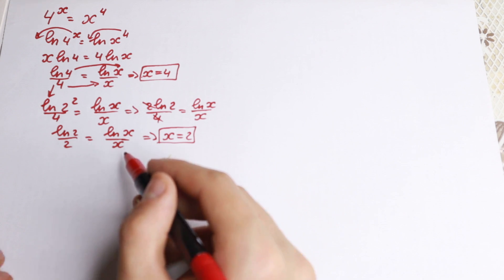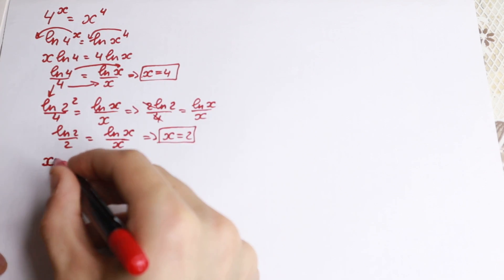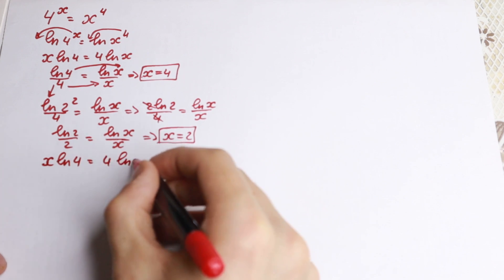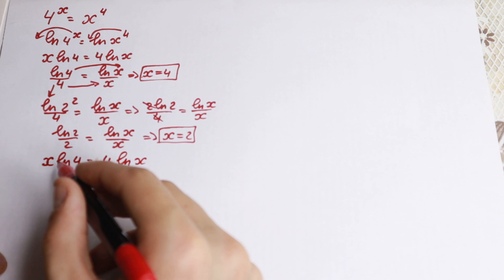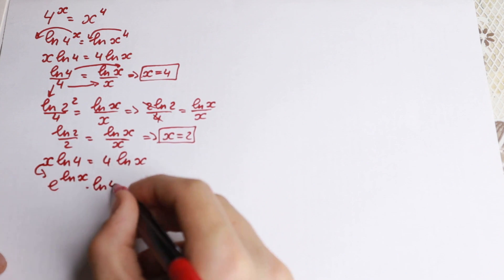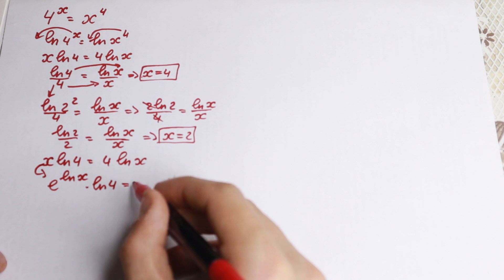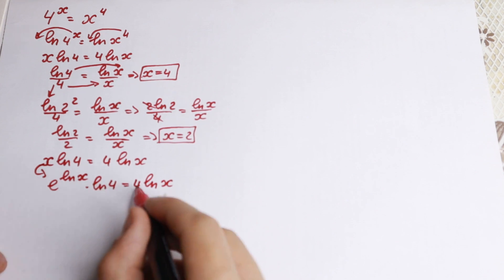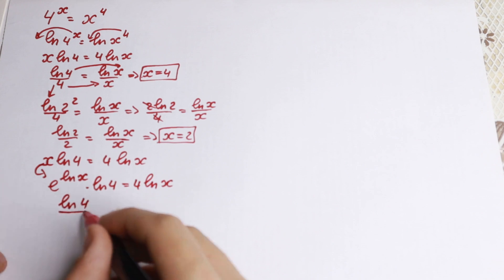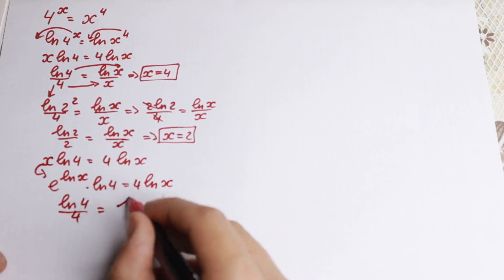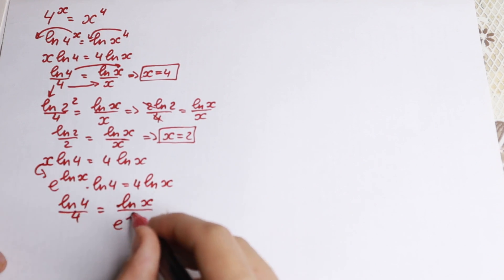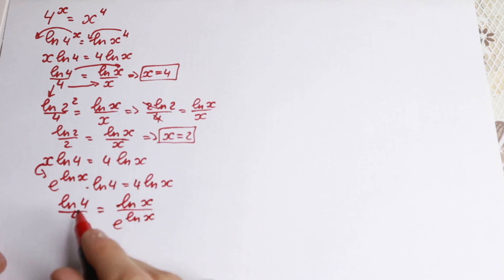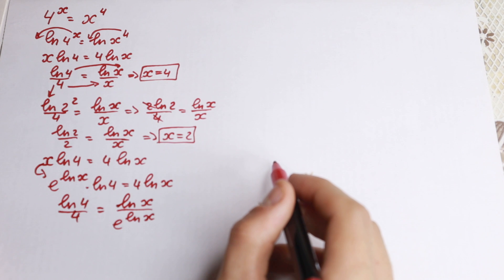To find the general solution we need to know about the Lambert W function. Starting from x·ln(4) = 4·ln(x), let's write x as e to the power ln(x). So e^(ln(x)) · ln(4) = 4·ln(x). If we rearrange by dividing by 4, we get ln(4)/4 = ln(x)/e^(ln(x)).